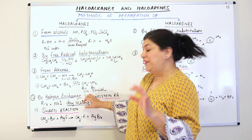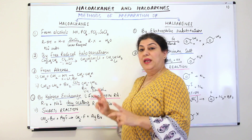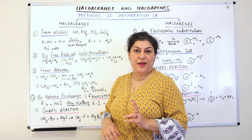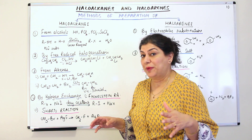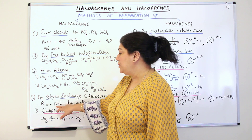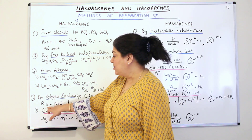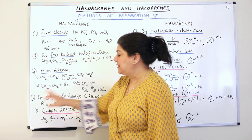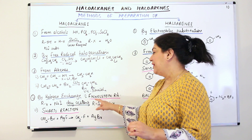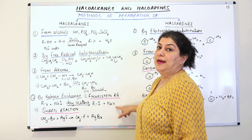In halogen exchange there are two named reactions: the Finkelstein reaction and the Swartz reaction. In the Finkelstein reaction, you use sodium iodide in the presence of dry acetone. X should be chlorine or bromine, and iodine takes its place. So using NaI in dry acetone, you get the iodo derivative and sodium halide is given out.